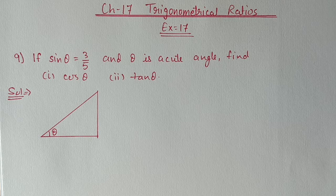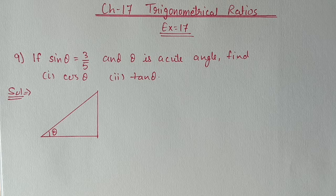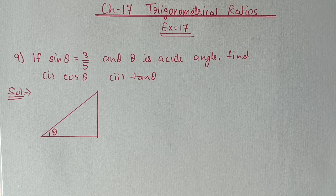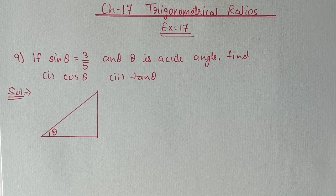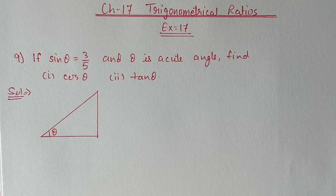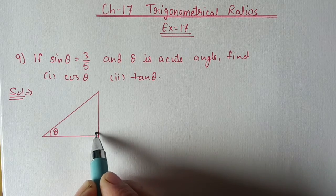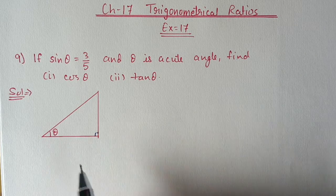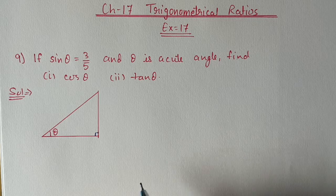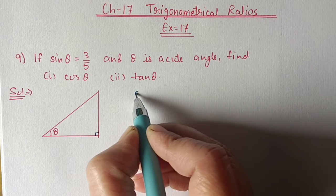Hello students, we are doing Chapter 17, Trigonometrical Ratios, Exercise 17. In today's video we are starting from Question 9: if sin θ equals 3 by 5 and θ is an acute angle, find cos θ and tan θ. First we will make a right angle triangle — this angle is 90 degrees and θ is the acute angle.